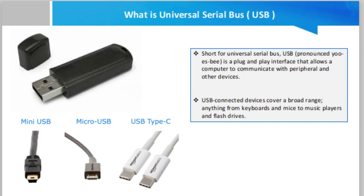A desktop computer usually has two to four ports in the front and two to eight ports in the back. A laptop computer has between one and four ports on the left, right, or both sides. The USB connection on a tablet is located in the charging port and is usually micro USB, and sometimes USB-C. Smartphones also have USB connectors.